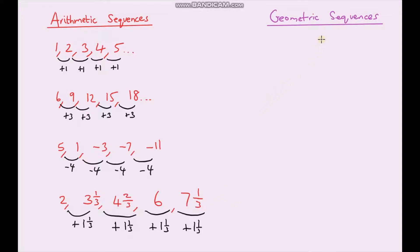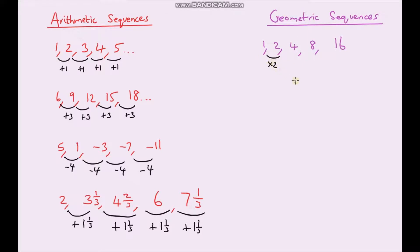Now let's look at geometric sequences. With a geometric sequence, instead of adding or subtracting the same amount each time, we multiply or divide by the same amount each time. This is a geometric sequence because we are multiplying by two each time. To go from one to two we times by two, two to four we times by two, four to eight we times by two, and eight to sixteen we times by two.